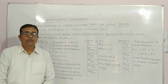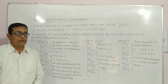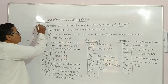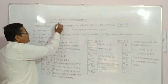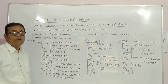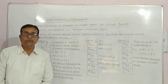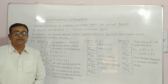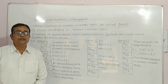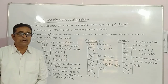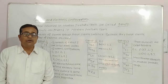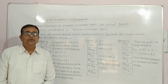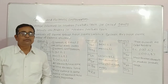Today we are going to study Groups and Electronic Configuration in the Modern Periodic Table. We have already studied the range or structure of the Modern Periodic Table, then Periods and Electronic Configuration. Now here we study the Groups and Electronic Configuration.